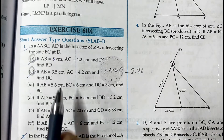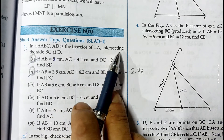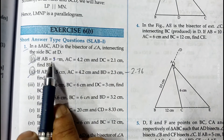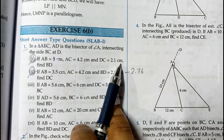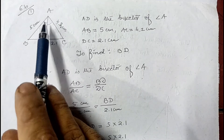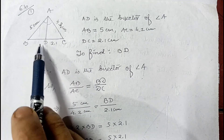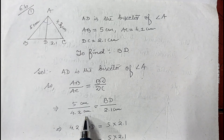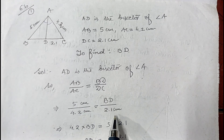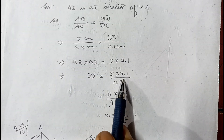In question number 1, in triangle ABC, AD is the bisector of angle A intersecting side BC at D. If AB equals 5 cm, AC equals 4.2 cm, and DC equals 2.1 cm, then we have to find the length of BD. Since AD is the bisector of angle BAC, we can write BA by AC equals BD by DC. So 5 by 4.2 equals BD by 2.1. Cross multiplying: 4.2 into BD equals 5 into 2.1, so BD equals 5 into 2.1 divided by 4.2.